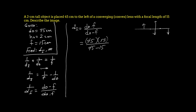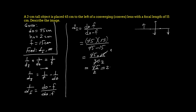So that's (45 × 15) / 30. The 15 and 30 cancel to give a 2 in the denominator and a 1 in the numerator, leaving 45/2, which is 22.5 centimeters. I did not carry the centimeters throughout because if do and f are in centimeters, di will come out in centimeters automatically.